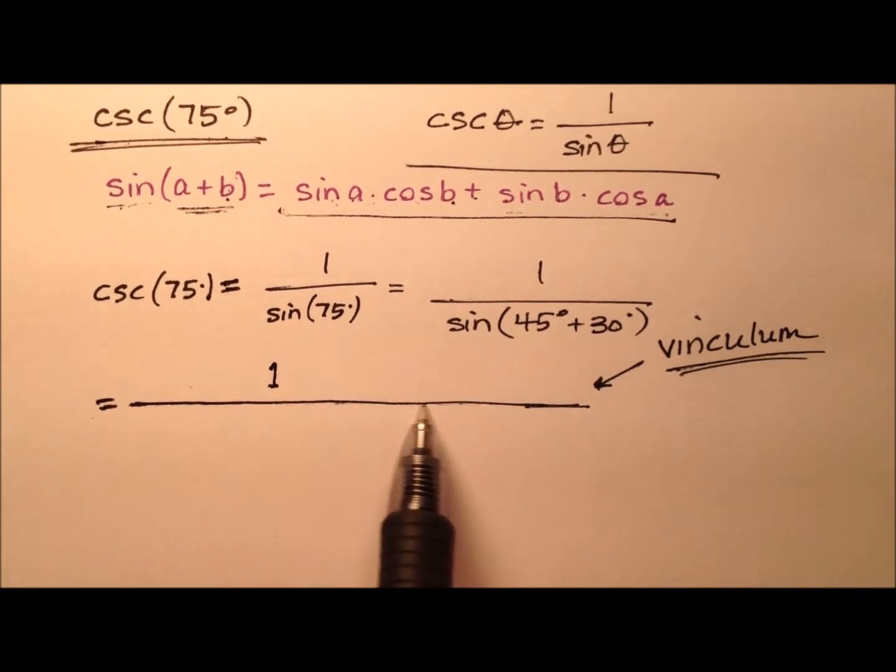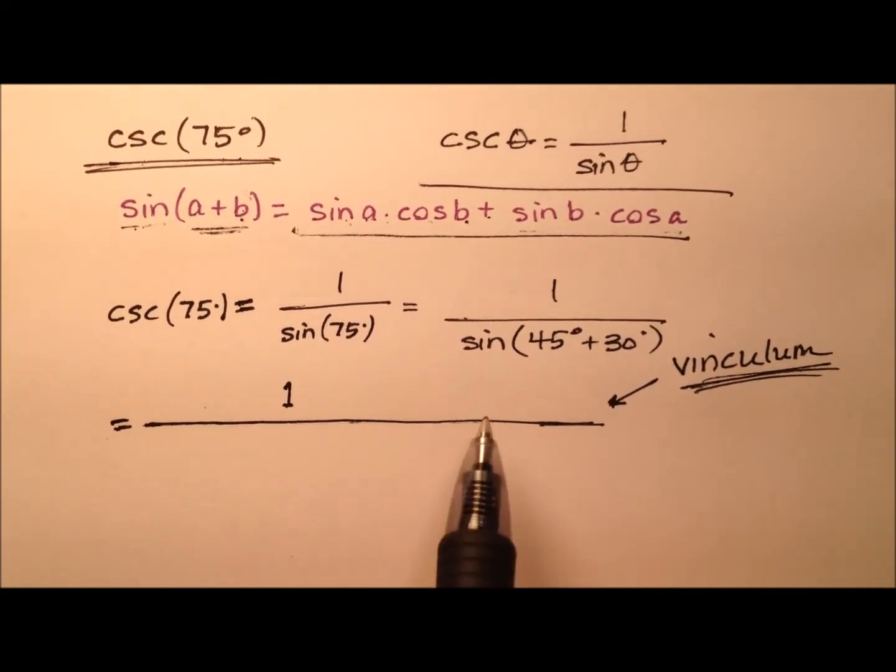It's the fraction bar, and you've probably seen it before. It's also the bar used to signify we have repeating digits. So the bar over the repeating digits is also called a vinculum. Anyway, I digress.